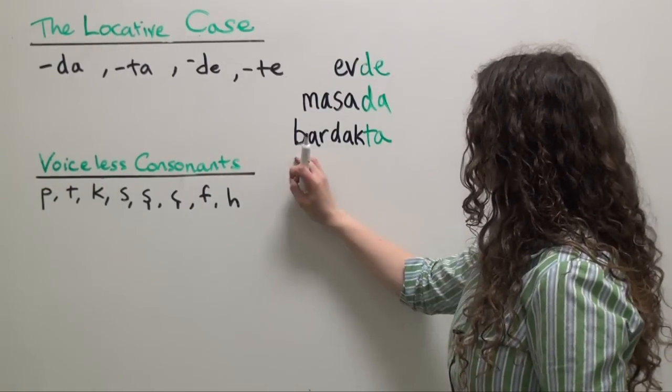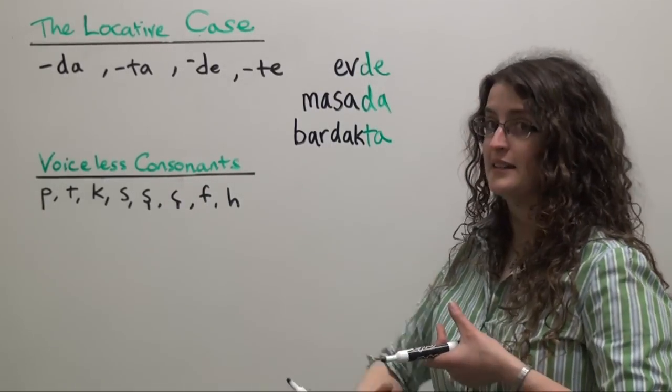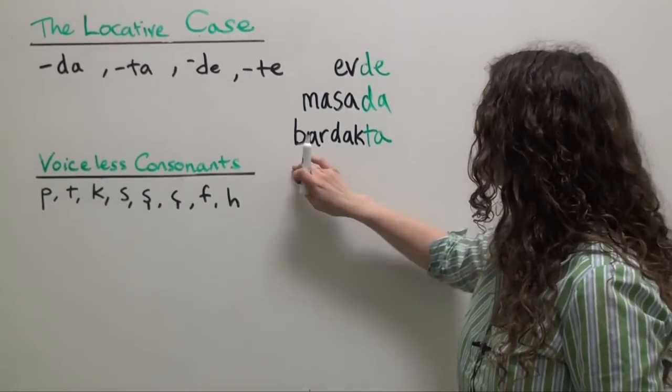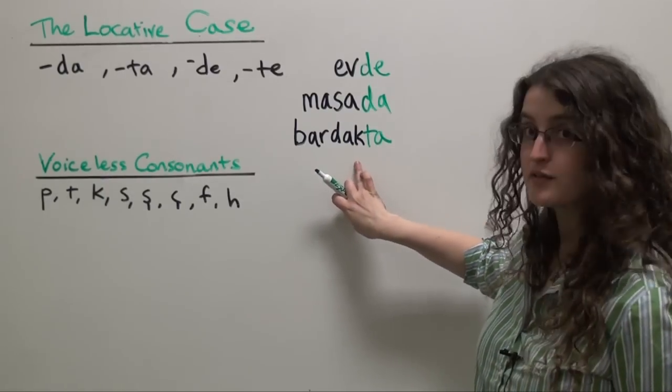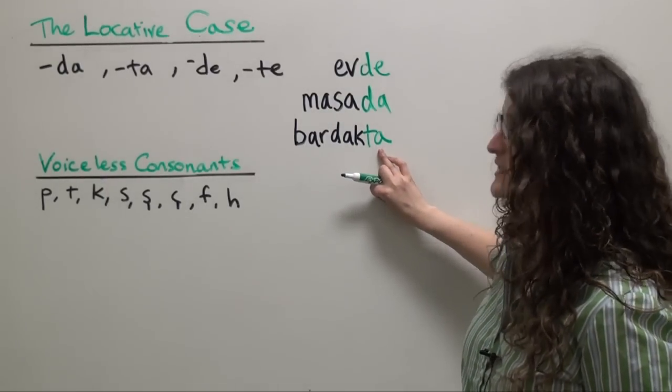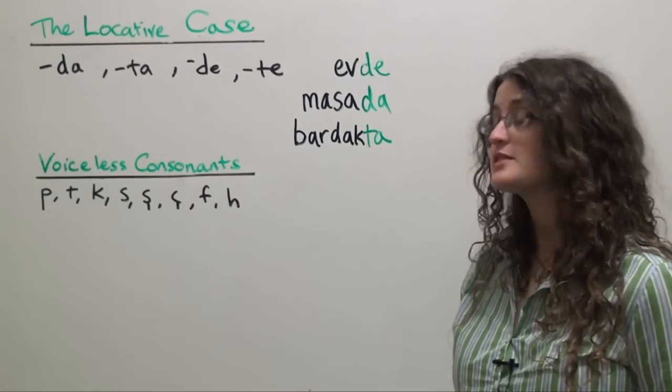Notice that bardakta is a lot easier to say than if we tried to say bardakda or something like that. Bardakta. Voiceless consonant at the end of the noun, voiceless consonant at the beginning of our locative case ending. That's pretty simple. Let's see it once more.